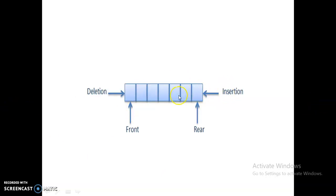This is the structure of a queue — it has a front end and a rear end. In a system application, we deal with insertion and deletion of data. Insertions take place through the back end and deletions through the front end. The person who first entered the queue is the person who first exits — this is called First In First Out.